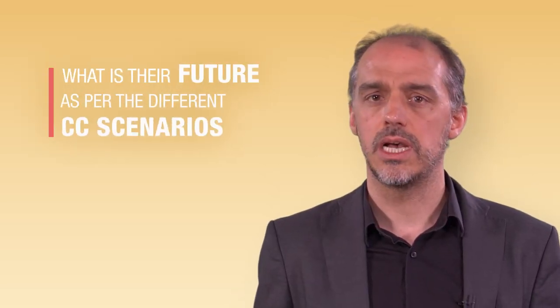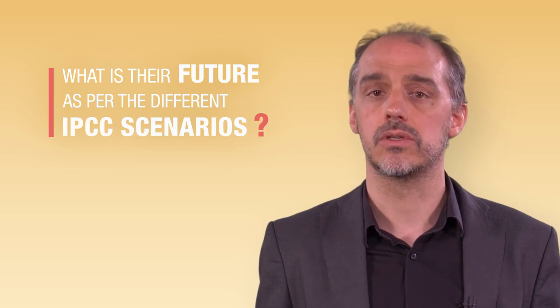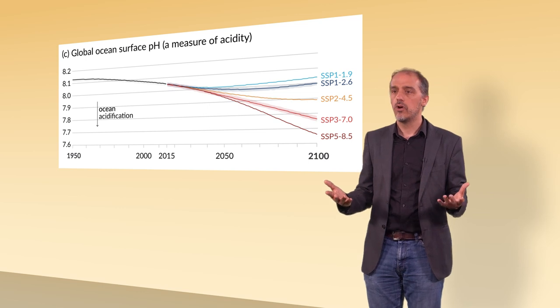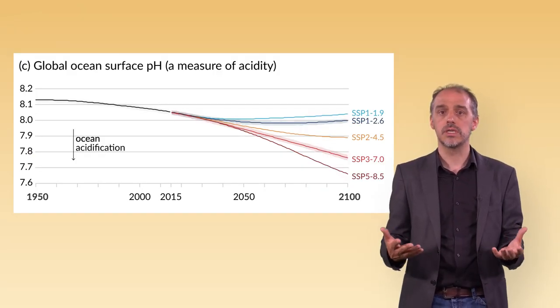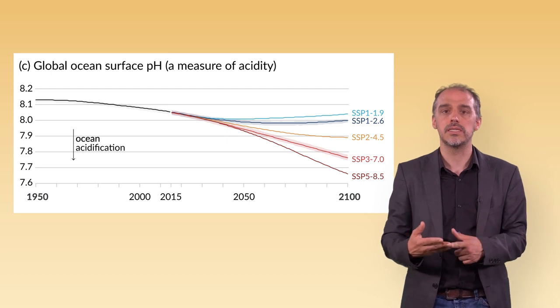What is their future as per the different IPCC scenarios? At two degrees of warming, almost all the corals on the planet would disappear as a consequence of warming and acidification.